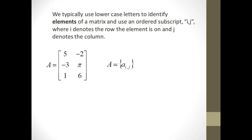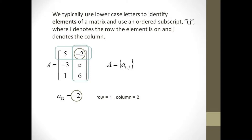Typically, we use lowercase letters of the alphabet to refer to elements of the matrix. We designate which particular element by using a subscript like ij, where the first number specifies the row and the second specifies the column containing the element. For example, in the matrix shown here, the element A sub 1, 2 refers to the element in row 1 and column 2, which in this case is negative 2.